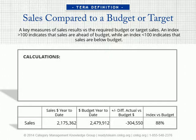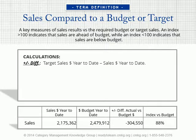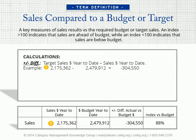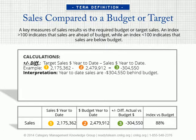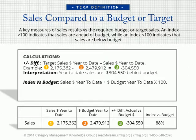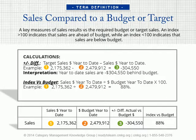Category managers are usually given their targets by senior management. These targets, collectively, equal the total sales target for the retailer. They need to compare their targets or budgets to the actual sales results on an ongoing basis. They can calculate the difference between their target and actuals by subtracting the sales dollars year-to-date from the target sales year-to-date. In this example, sales dollars year-to-date is $2,175,362 minus dollar budget year-to-date of $2,479,912, to equal a difference of negative $304,550. So year-to-date sales are $304,550 behind budget.